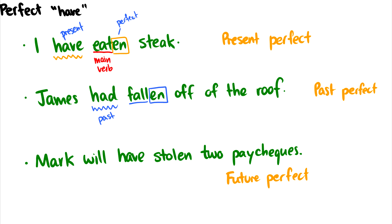What about in the third sentence? Mark will have stolen two paychecks. Well, this is future. Even though the perfect have on its own doesn't have future tense, it has this will coming before it, which would be in T, of course, just like before. But it precedes have, meaning it's the future perfect.